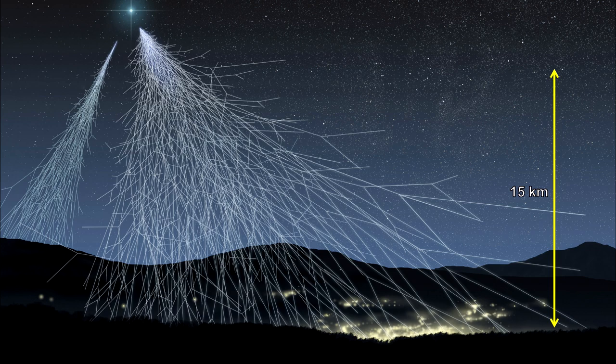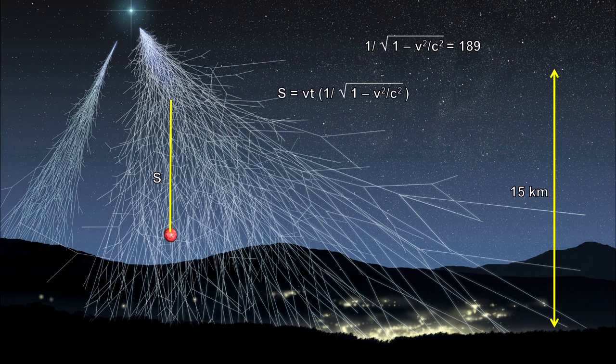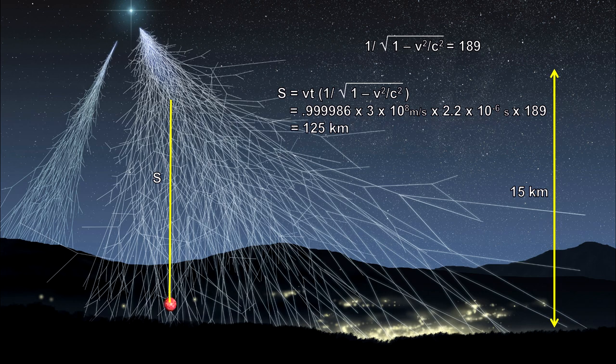This high count rate is explained using relativistic time dilation. The measured velocity of the created muons is 0.999986 times the speed of light. So, by time dilation, the half-life would be 189 times longer. This gives the muons time to travel up to 125 kilometers before half of them have decayed. And that's plenty of time for most of them to reach the surface in line with the numbers observed.